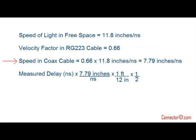To calculate the speed of the pulse in the coax cable, you multiply the velocity factor with the speed of light. The result is 7.79 inches per nanosecond.